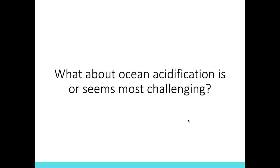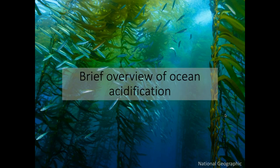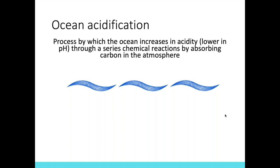So we're going to do a quick overview of ocean acidification for those who are not so familiar. Ocean acidification is the process by which the ocean increases in acidity — or becomes lower in pH — through a series of chemical reactions by absorbing carbon from the atmosphere. I'm not going to talk about chemistry in the nitty-gritty today; I'll leave it pretty broad. This is the most chemistry we're going to do: carbon dioxide plus water leads to increased acidity in the ocean. If you take away that, you'll be able to follow along for the rest of the presentation.